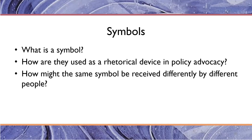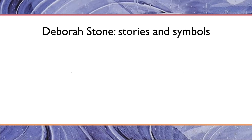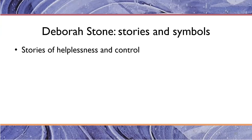Symbols are a really important rhetorical device in policy advocacy. They're used all the time and can be images, but they can also be ideas like the Constitution or even just the idea of the flag without showing a picture of it. Deborah Stone also talks about how stories and symbols are combined — this is an introduction to a body of theory we'll discuss called the narrative policy framework, a new and exciting theory about how public policy is made.